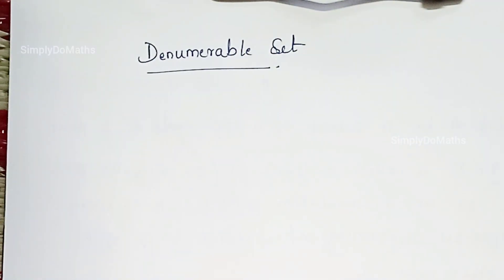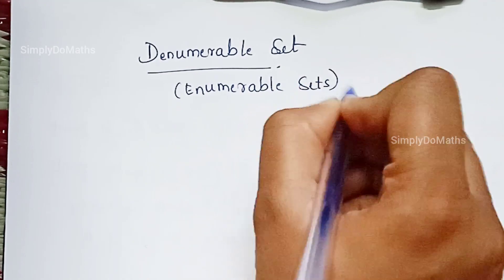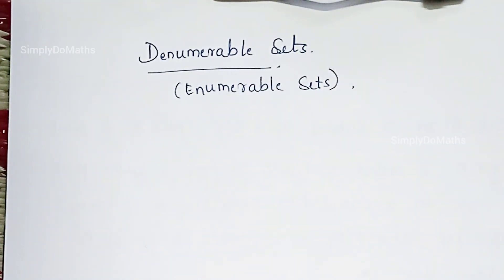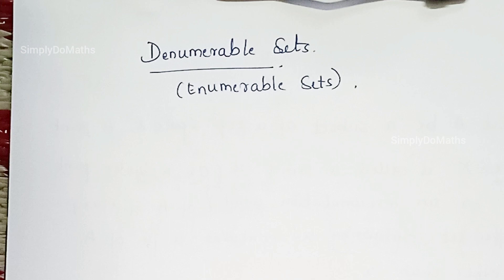Let's learn about denumerable sets, also called enumerable sets. In modern algebra or abstract algebra, set theory plays a very important role. In our previous video we discussed the meaning of equivalent sets — when we call two sets equivalent sets — and we discussed one-one and onto functions. Whenever we define the word enumerable sets, we again need the definition of bijection.